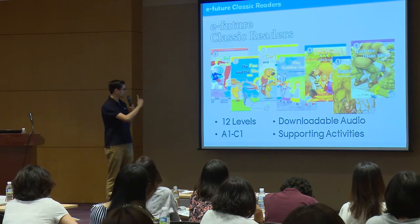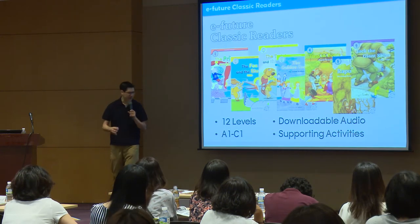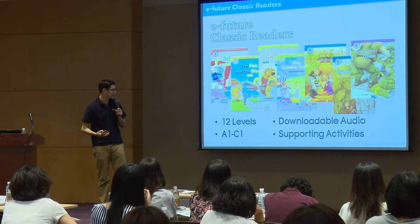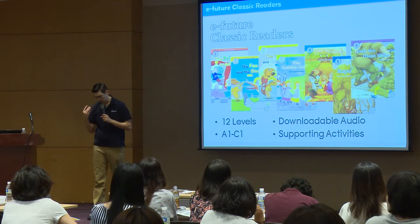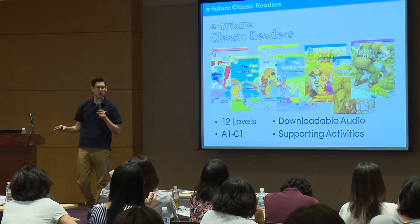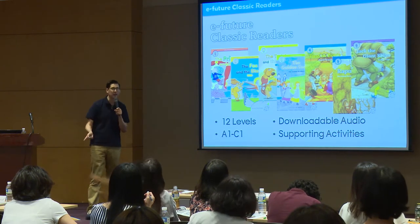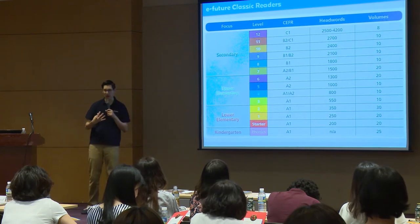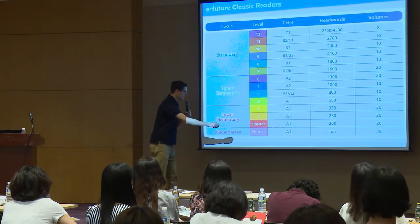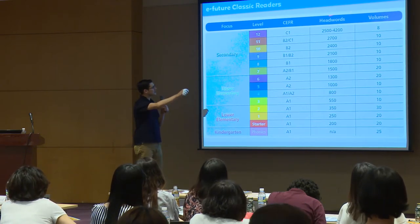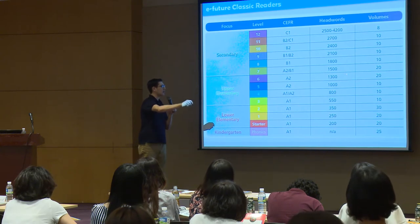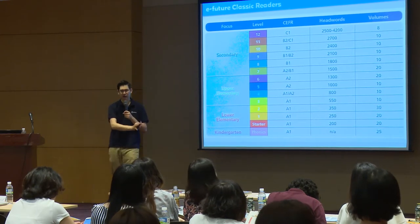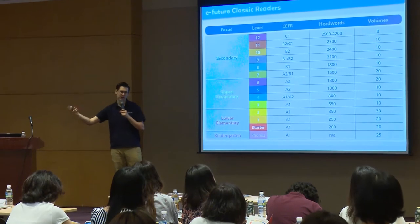Our Classic Readers have 12 levels. They go from the Common European Framework A1 up to C1, so we cover quite a range of ability levels. We've got downloadable audio and supporting activities — some even have video and audio. This is how the reading library goes: we start at the phonics level. You can see the headword count — we build up slowly and steadily. We encourage students to start at the easiest level and, when they're ready, move forward.